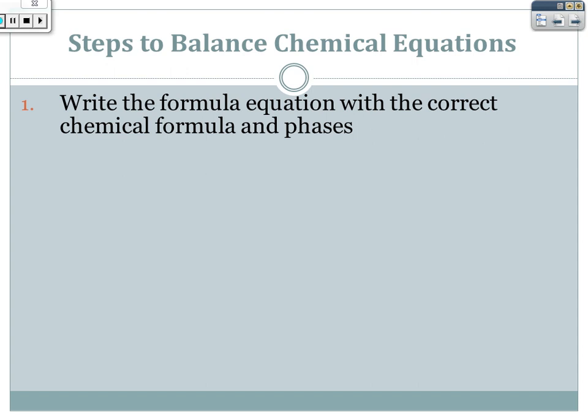Here are the steps to balancing chemical equations. The first step is to write the formula equation with the correct chemical formulas and phases. For example, sodium plus chlorine going to NaCl: sodium is a solid, chlorine is a diatomic gas so it must be written as Cl2 gas, and sodium chloride is also a solid. All chemical formulas must be correct and balanced before you begin.